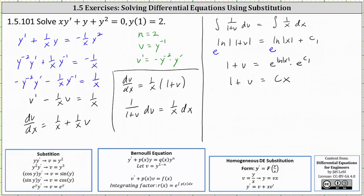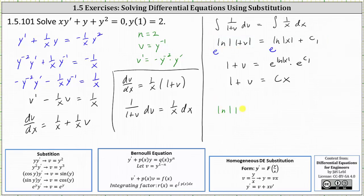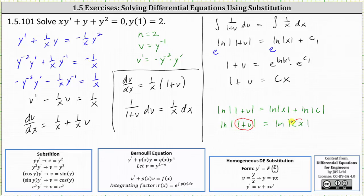Now let's talk about why we dropped the absolute value. For one explanation: the c sub 1 is just some constant — we can call that constant natural log of c, which is also just some constant. From here, we can combine the two logs on the right because we have a sum, which gives us natural log of the absolute value of the quantity 1 plus v equals natural log of c times x. Whenever we have two logs of the same base equal to each other, the inputs must be equal, meaning 1 plus v must equal cx.